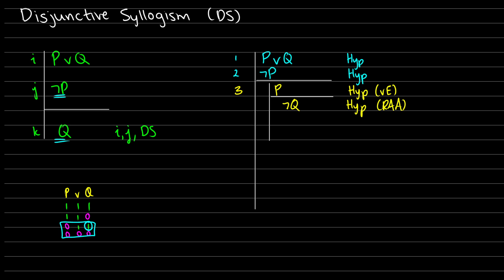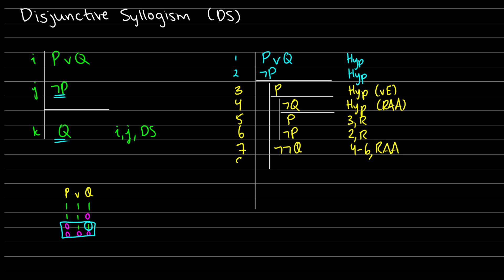So not q is line four. At this point, we can do some reiteration. We assumed p in step three, so we can reiterate it from three. And we assumed not p in step two, so we can reiterate that from two. Now we have a contradiction — we have p and not p. So we know our assumption of not q is false, which means we get not not q. From four to six, that's a proof by RAA. Then in line eight, we can use double negation on line seven to get q. Because we have not p and p, we know we're going to get a contradiction, so we can assume anything we want and negate it.